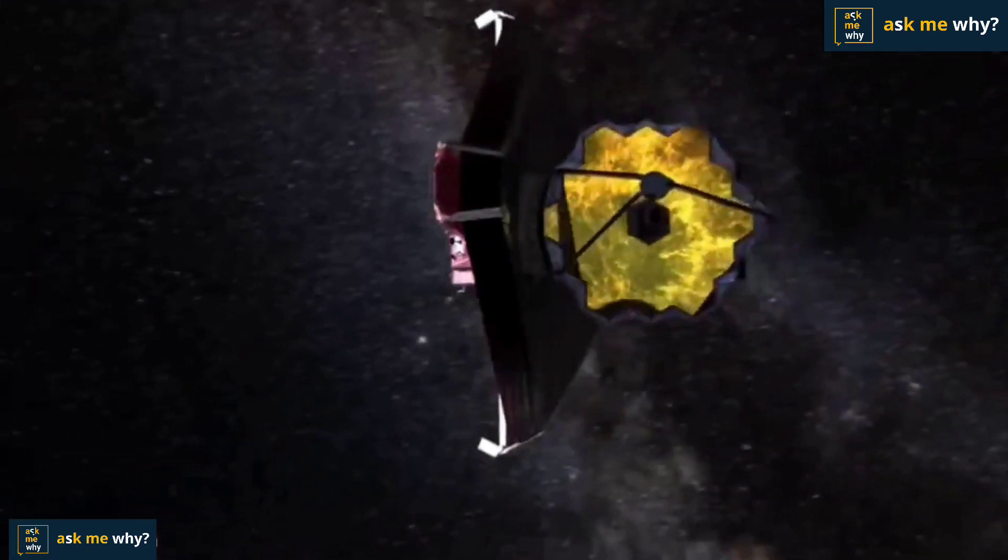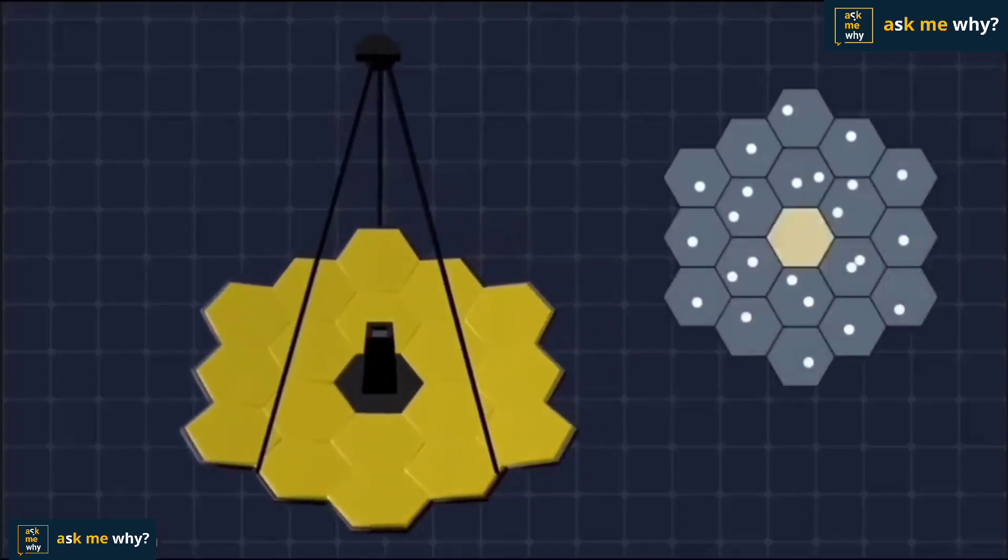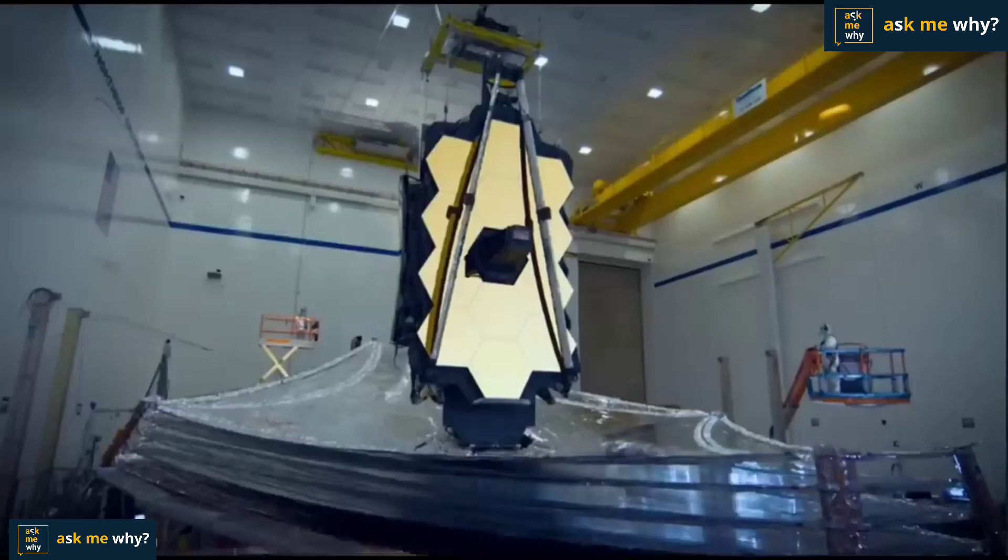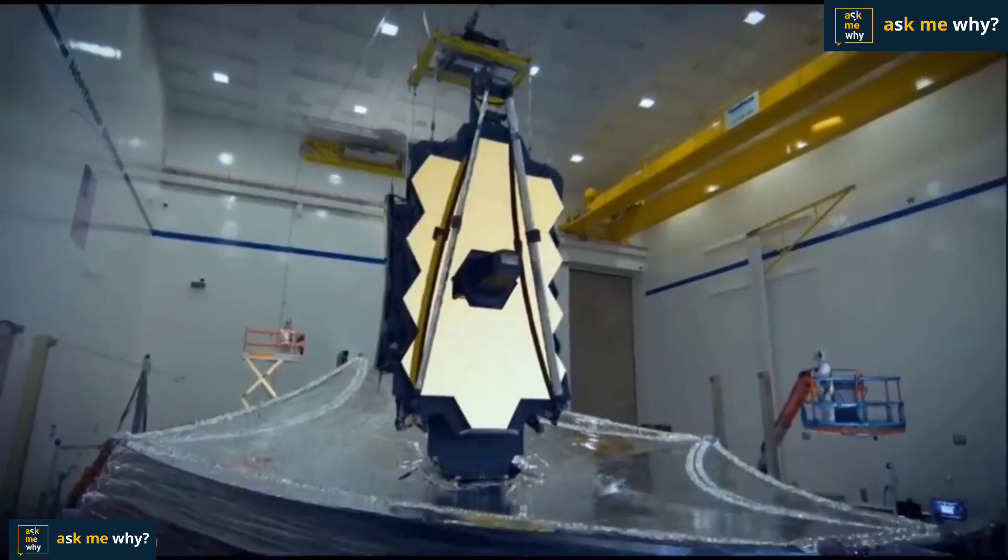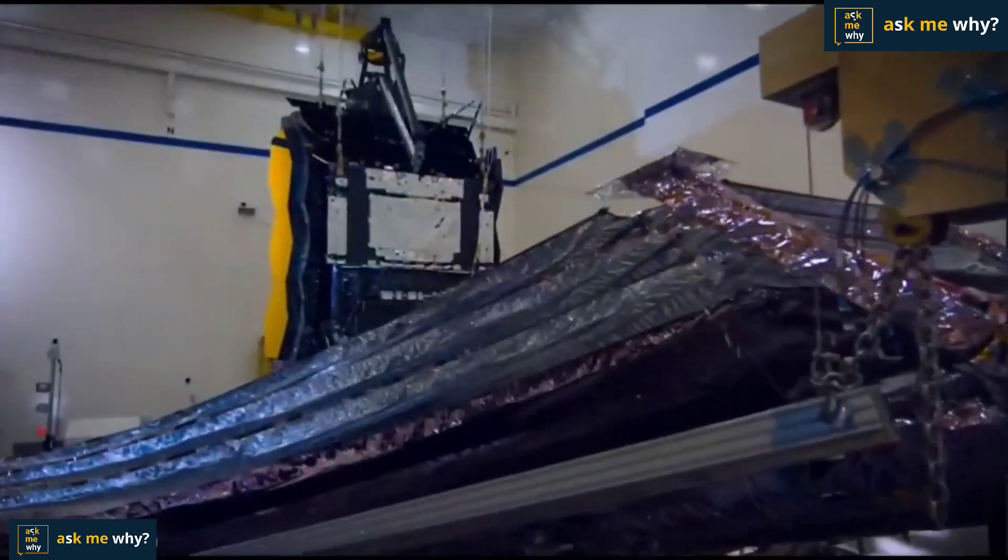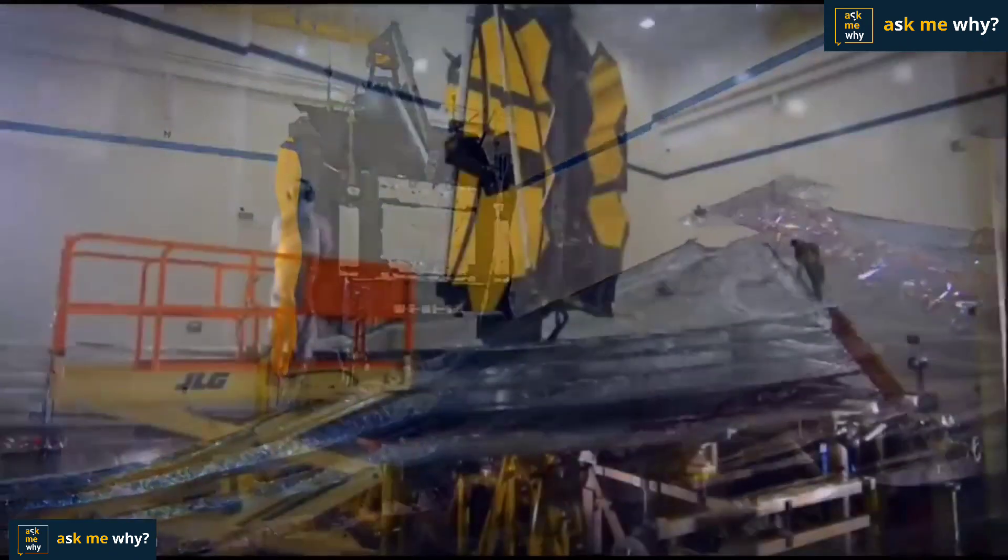But if there is any problem in James Webb telescope, it is 1.5 million kilometers away from the earth and it is not possible to send astronauts there to fix it. That's why mirrors in James Webb telescope are arranged so that they can adjust themselves. The James Webb was built with much more advanced technology than the Hubble telescope.